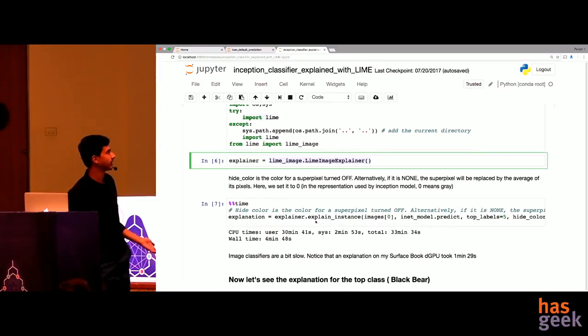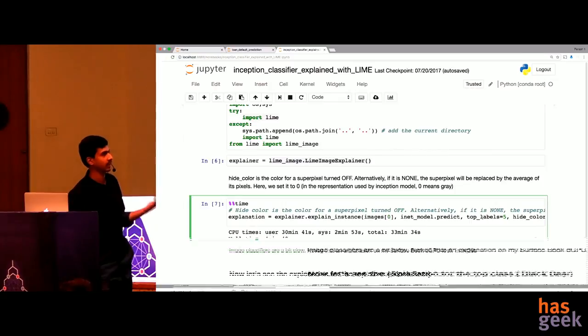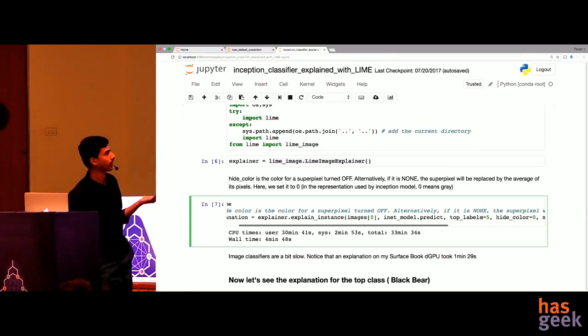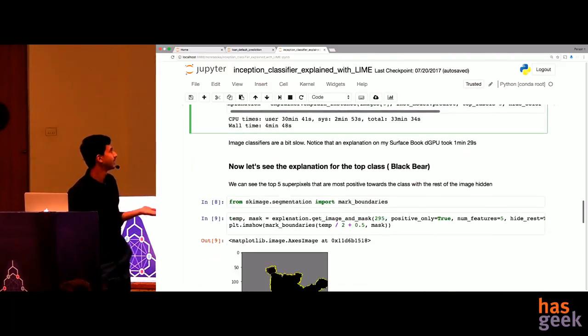Again, LIME is very easy to use. You just import LIME. You have an image explainer class. You do the explanation here. Explainer dot explain instance. You take the image, you take the model and you tell it how many labels to show. And parameters like that. It kind of takes some time. That's why I'm not doing it live. It takes like half an hour on this MacBook. You need a GPU to do deep learning.